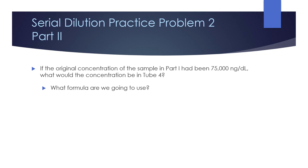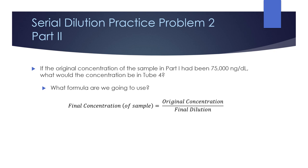Part 2: determine the final concentration in tube 4 if the initial concentration is 75,000 ng/dL. Using final concentration = original concentration ÷ final dilution: 75,000 ÷ 1000 = 75 ng/dL. The 75,000 is the initial concentration and 1,000 is the dilution factor for the final tube.